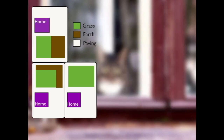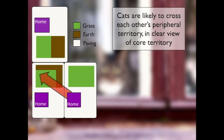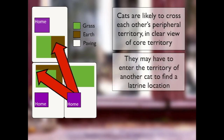This raises a number of problems. First, cats are likely to cross each other's territory in clear view of another cat's core territory to get from one location to another — which is completely unusual, as cats don't expect to encounter or see unfamiliar cats when in their own core territory. Second, it's quite common in domestic settings for a home not to provide suitable earth for a cat to dig in to create a latrine, so cats often have to leave their own garden to find a latrine location in another cat's territory. Both of these increase the risk of conflict.